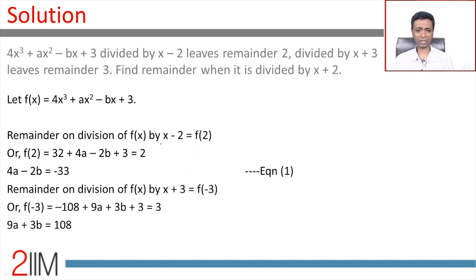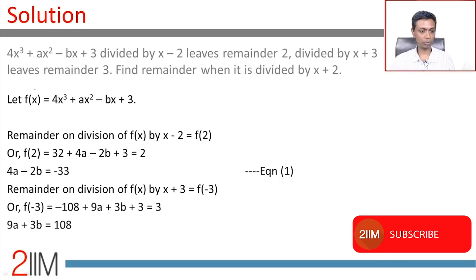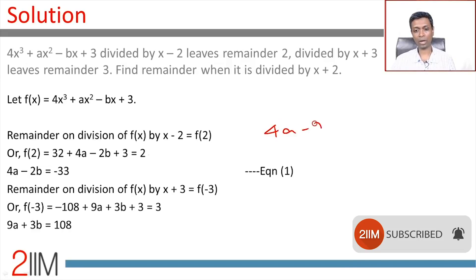Divided by x - 2, remainder is p(2) which should be 2. So 4 × 2³ which is 32 plus 4a - 2b + 3 equals 2, or 4a - 2b equals -33. 32 + 3 is 35, 2 - 35 is -33.